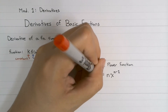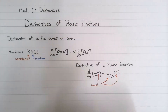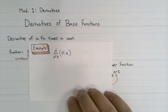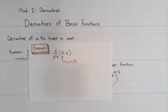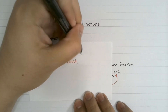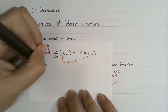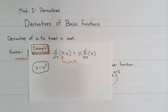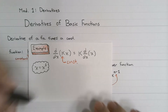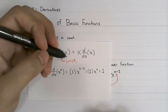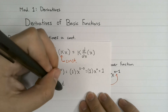We're not going to go over the full derivation of this, but you can find it in any basic calculus textbook. As an example, let's find the derivative of kx. Since k is a constant and x is a variable, the derivative of kx with respect to x equals k times the derivative of x with respect to x. Writing x as x to the power of 1 and applying the power rule, we get 1 times x to the power of 0, which is just 1. Therefore, the derivative of kx is simply k.